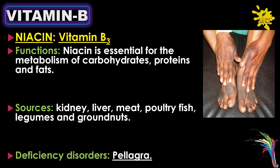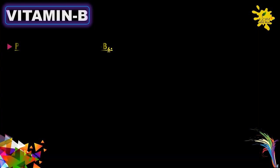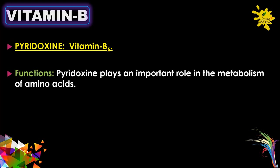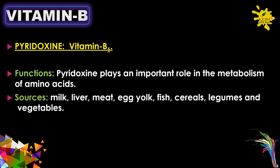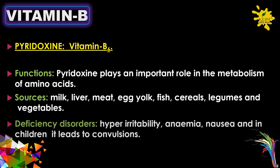Vitamin B6: the chemical name is pyridoxin. Pyridoxin plays an important role in the metabolism of amino acids. Sources include milk, liver, meat, egg yolk, fish, cereals, legumes, and vegetables.